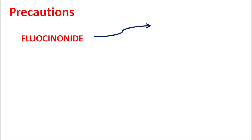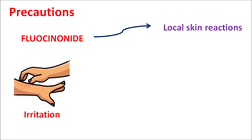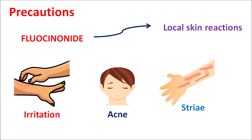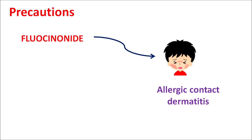Another important precaution is that when fluocinonide is applied on the skin, it can produce some local skin reactions — irritation of the skin, dryness, redness, acne-type skin eruptions, stria formation, and skin atrophy resulting in thinning of the skin. That's why it should be applied as a thin film at a low dose so that local skin reactions can be minimized. Similarly, this drug can produce allergic contact dermatitis — an allergic condition where even application of the drug does not reduce inflammation, indicating development of allergic contact dermatitis.